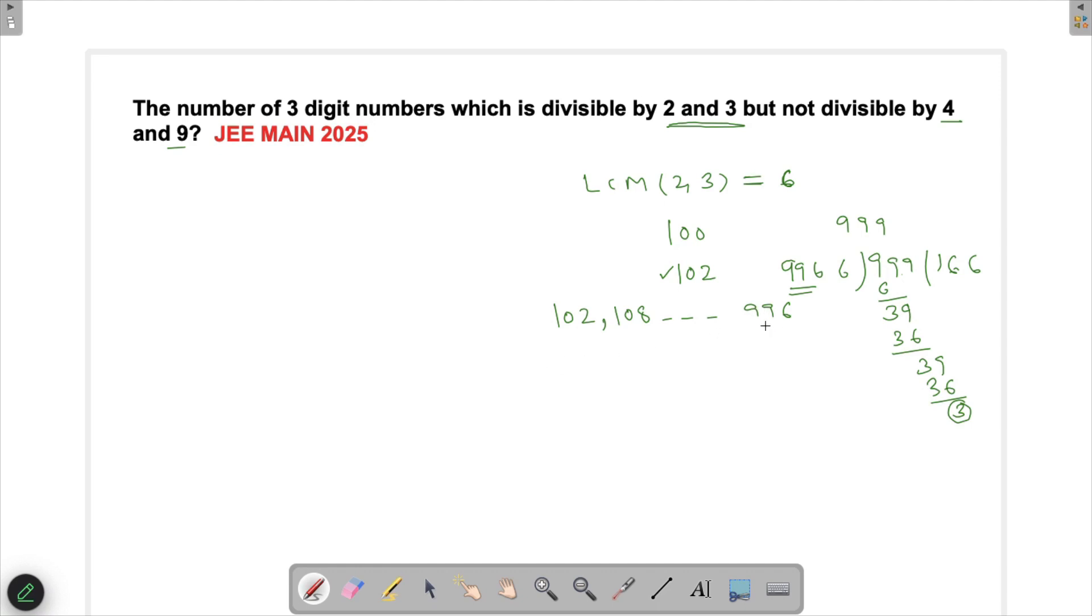How do we find out the number of terms here? We know in an AP the nth term is given by a plus n minus 1 into d. So this is what we will substitute here. So while our an is 996, my a is 102, my n is something which I need to find out, and d is 6.